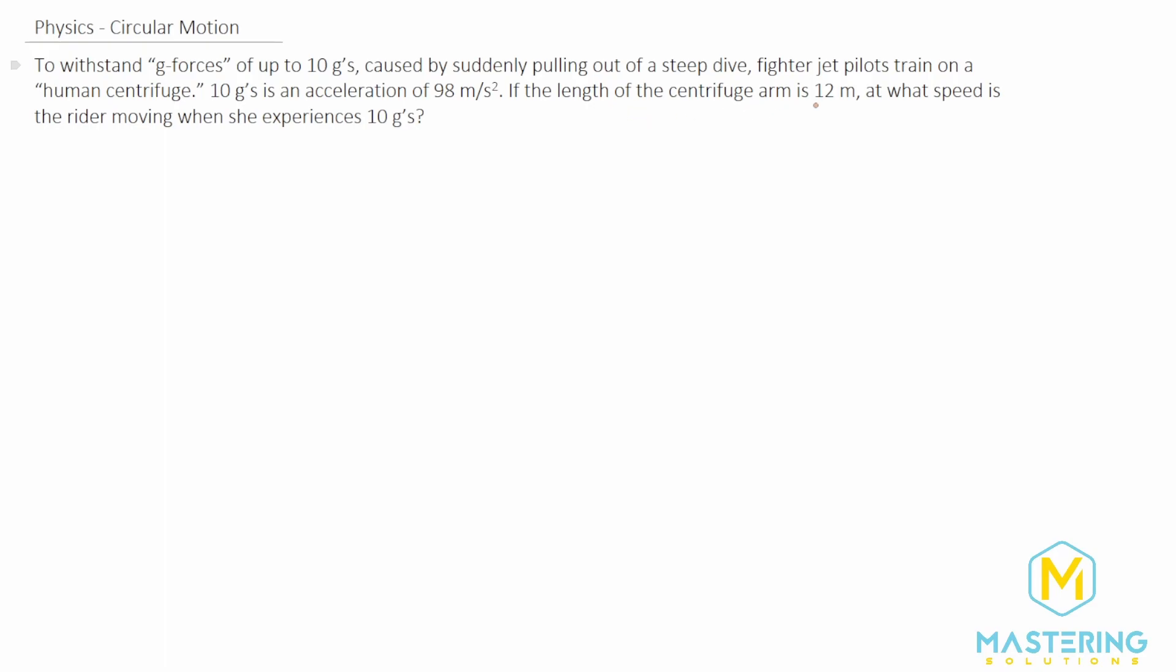They give us the length of the arm as 12 meters and they want us to figure out what speed they're going when they're experiencing those 10 g's. First, let's write down and remind ourselves of the equation for acceleration in circular motion, which is velocity squared over the radius.